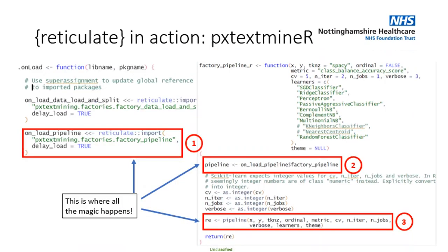I'm not going to spend as much time on Reticulate as I did with Golem — things are pretty much straightforward. It's mostly important to show you an example of how the magic happens, because it really opens up so many possibilities for R, being able to access Python in the background. I've summarized the whole process in three basic steps. On the left-hand side, you see the definition of the so-called onload function that many packages use, where you import your Python modules and have them waiting to be called by a function — in this case, the function on the right-hand side.